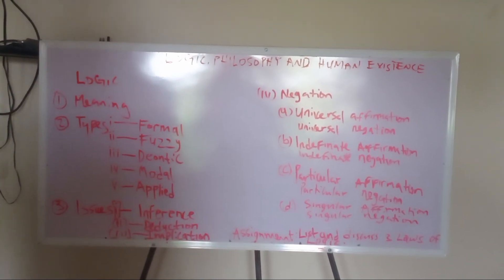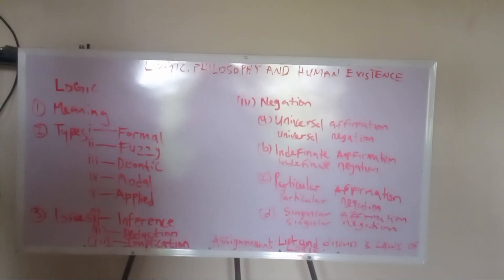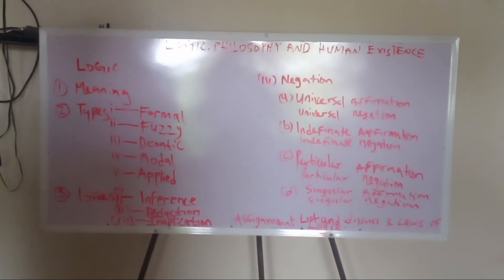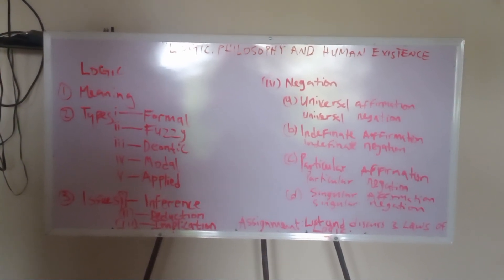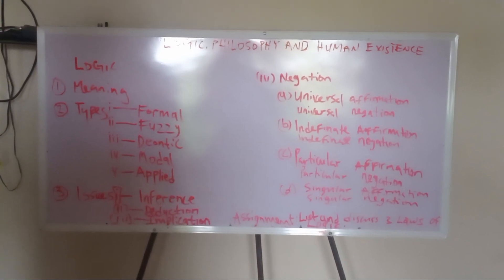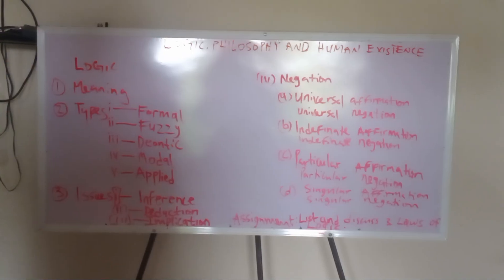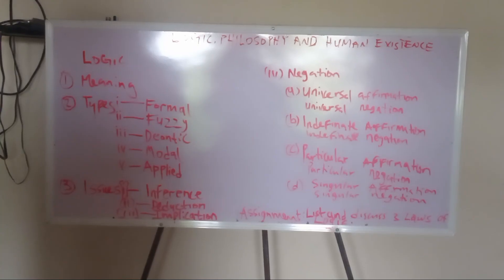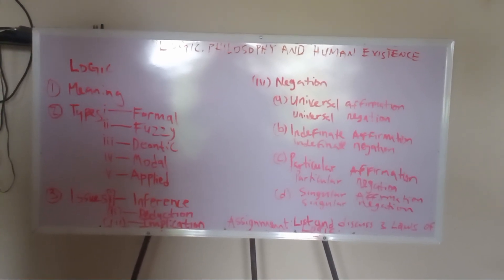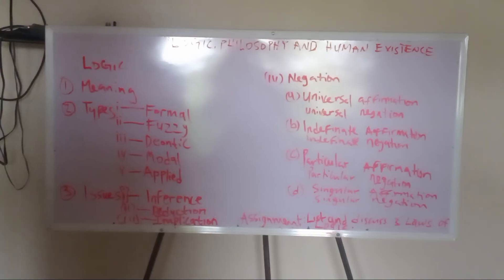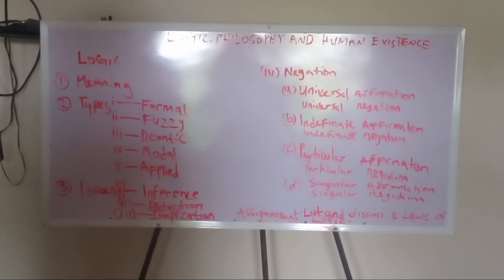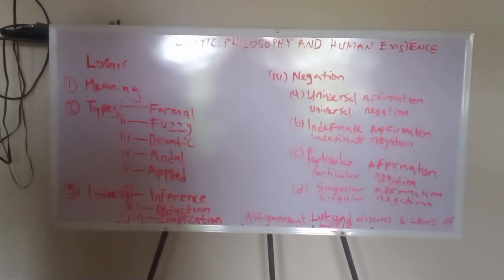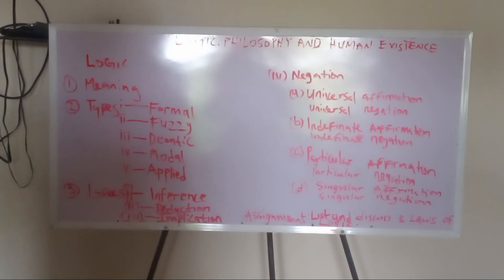Somebody commits a crime in the society, it is binding on the law enforcement agent to fish him out. It is obligatory for you to pay your tax and so on. Let's move to modal logic. Modal logic is a branch of modality. We are talking about modality. There is contingency, possibilities, impossibilities. An example is men are necessarily social animals. What is the modality of doing things in a particular office? What is the modality of doing things in a particular gathering?